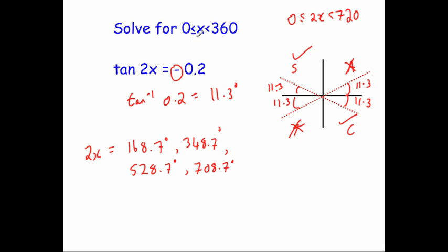But the question wanted it for x, so we need answers between 0 and 360. We'll divide all of them by 2. Dividing the last one gives 354.35 degrees. 528.7 divided by 2 gives 264.35 degrees. 348.7 divided by 2 equals 174.35 degrees. And finally, 168.7 divided by 2 equals 84.35 degrees.